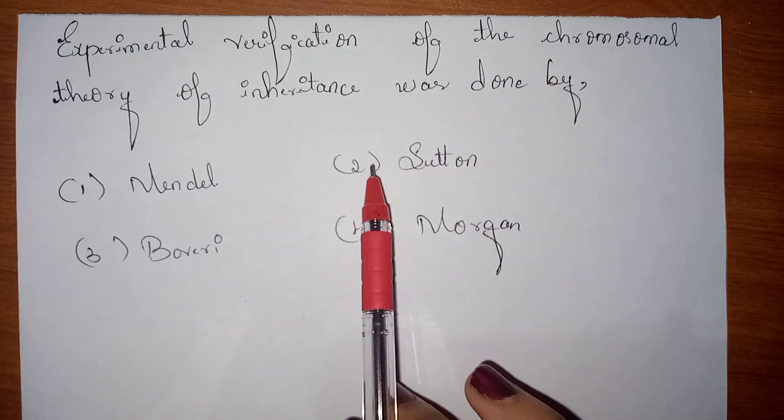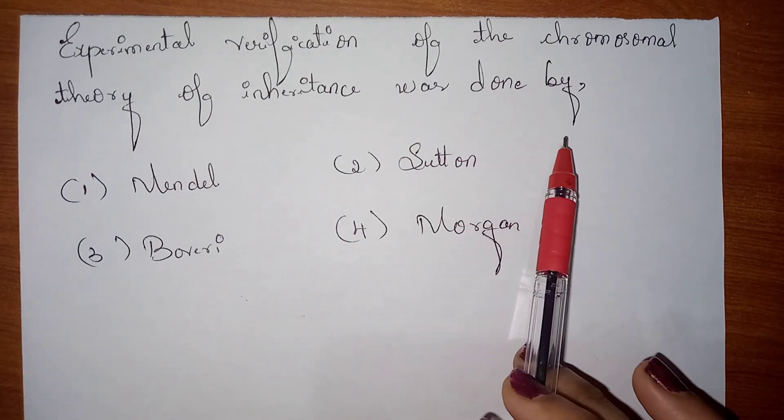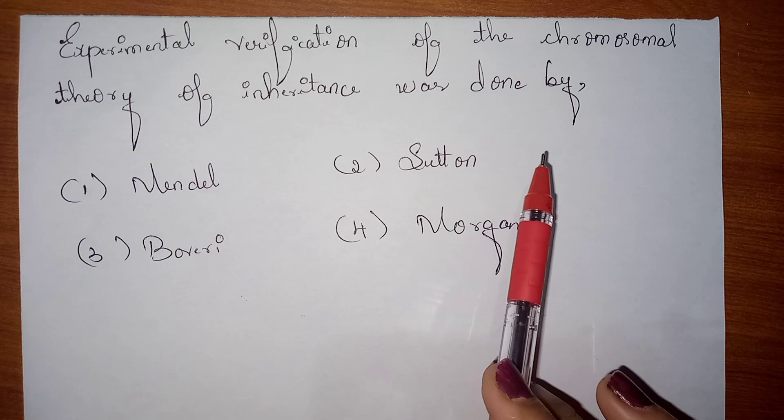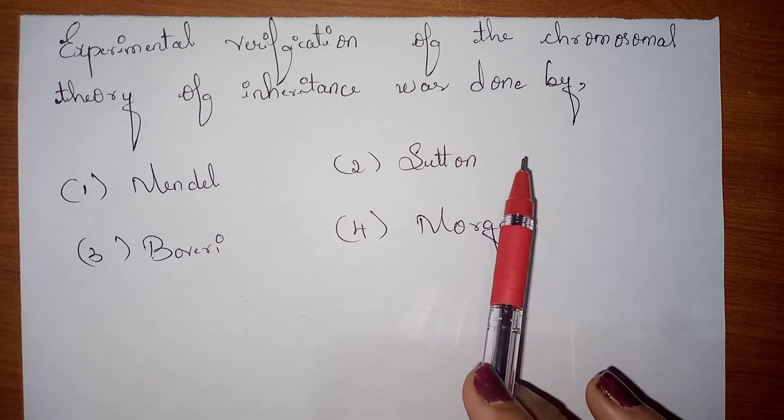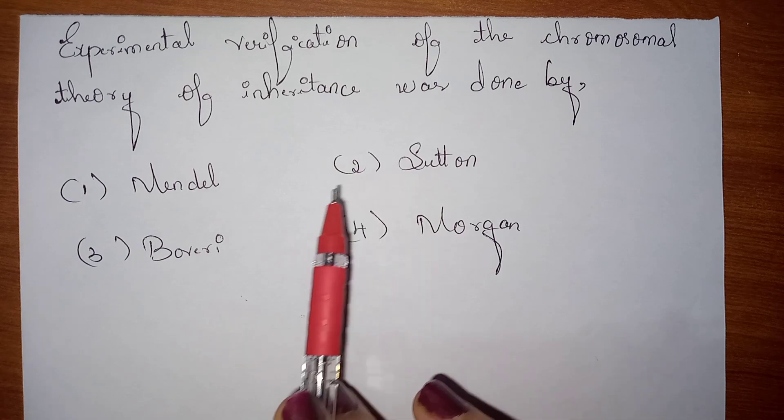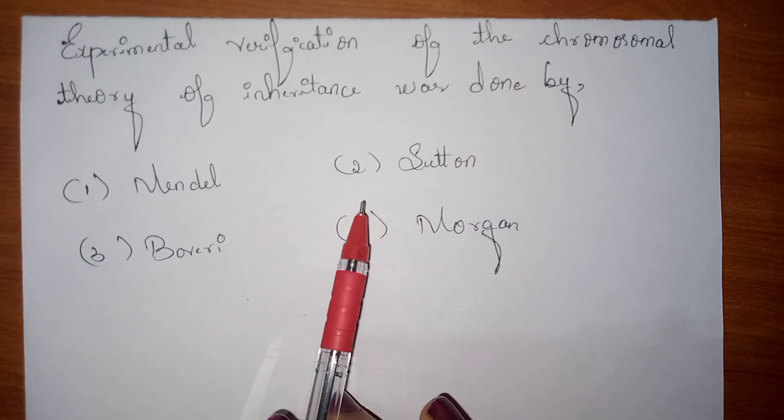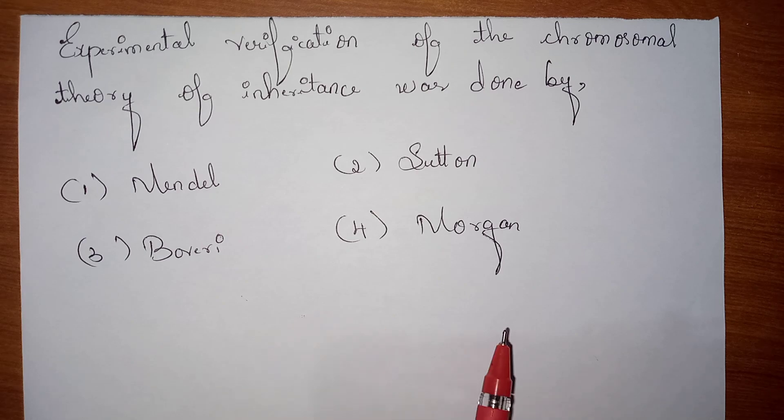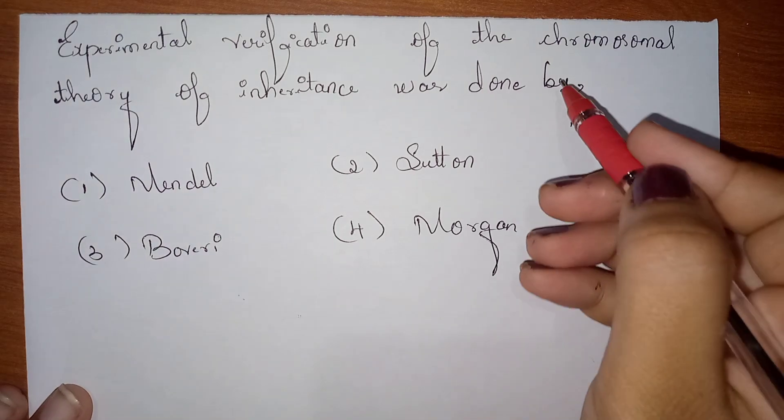The next question is: Experimental verification of the chromosomal theory of inheritance was done by - that means who done the experimental verification of the chromosomal theory of inheritance. The options are: Option 1: Mendel, Option 2: Sutton, Option 3: Boveri, Option 4: Morgan.